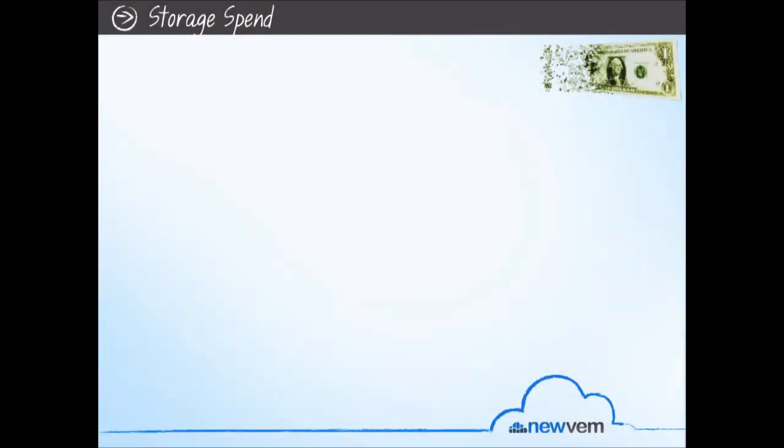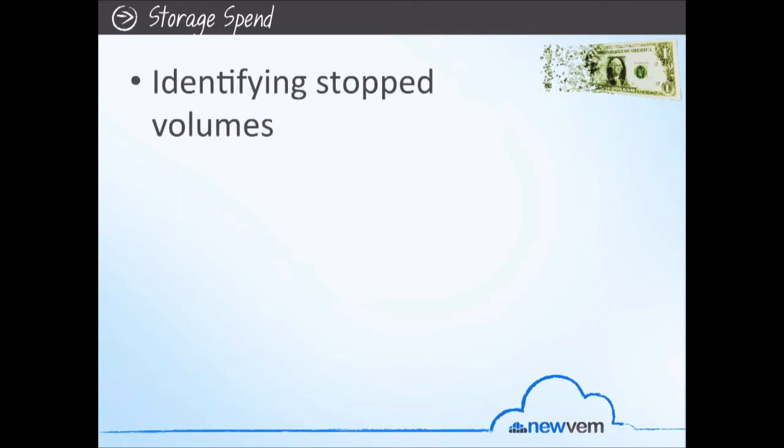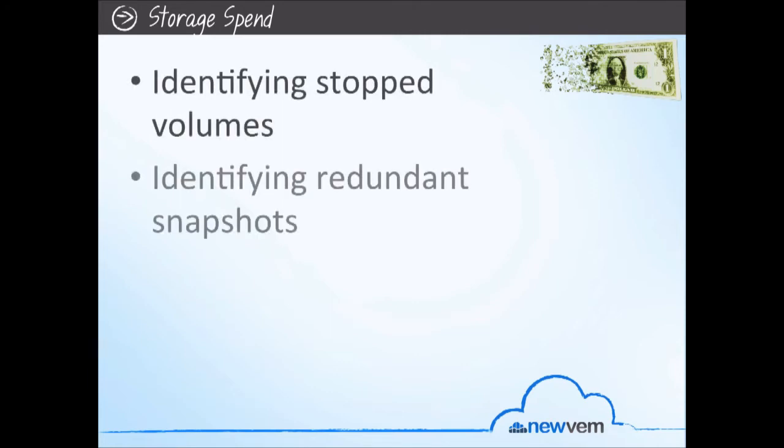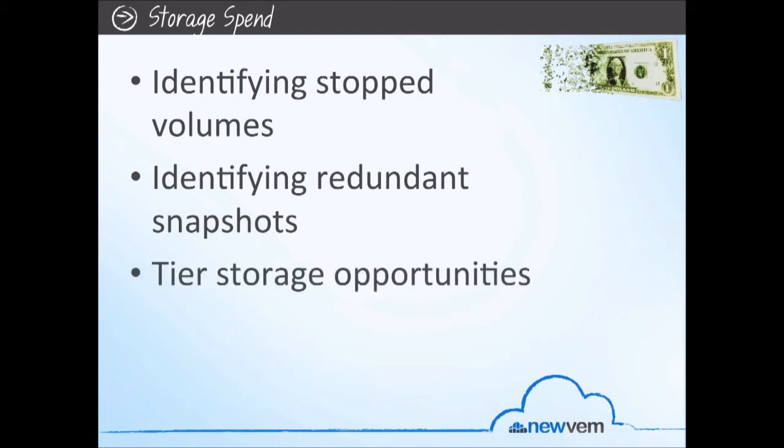Regarding storage, the efficiency insights include identifying stopped volumes to terminate and identifying redundant or unnecessary snapshots, as well as tier storage opportunities between lower-cost storage options. Regarding volumes, many times we find volumes have been stopped but not terminated — so again, you're paying for a volume when you don't need it. Another example is that it's so easy to create snapshots that you basically create too many, resulting in redundant and stale snapshots that you shouldn't be maintaining anymore. Just terminate those snapshots and you immediately save money.